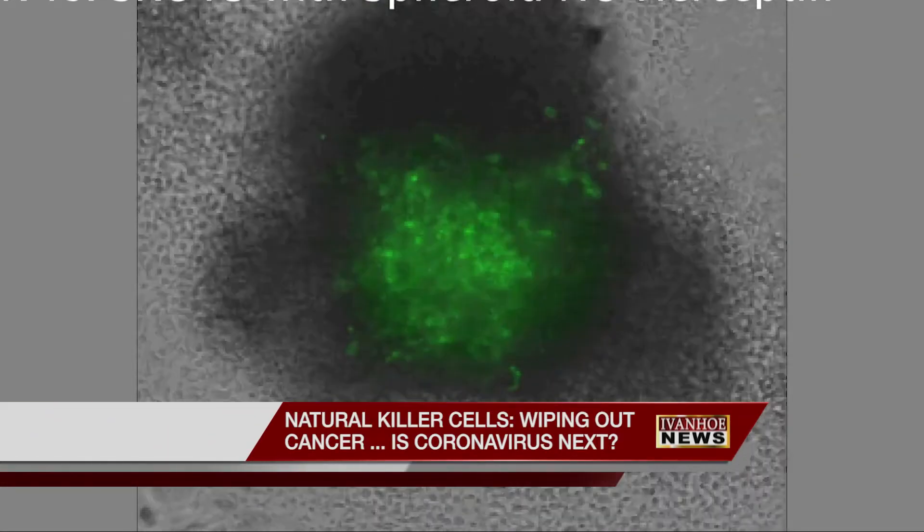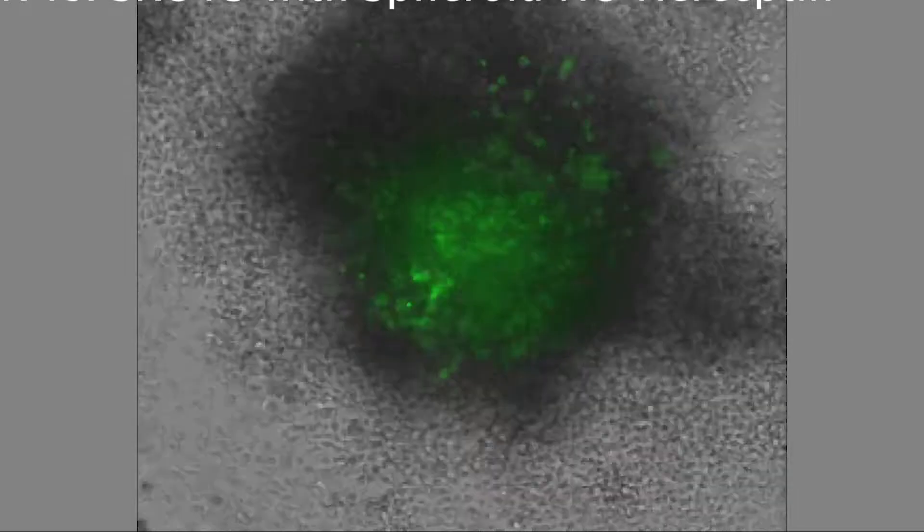Scientists describe these as assassins in the human body. Malignant or dangerous cells are seen here in color. Watch what happens when the natural killer cells find them.